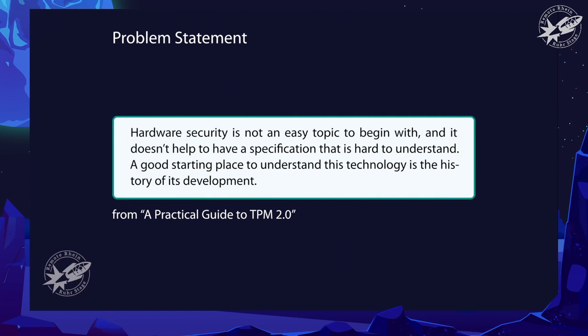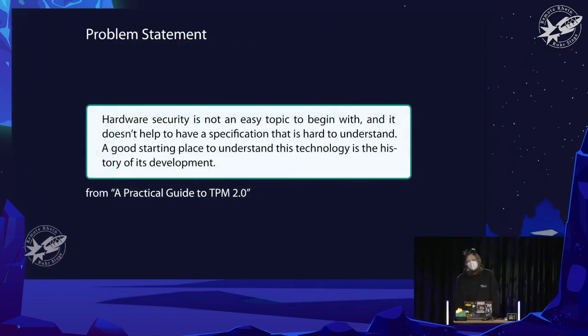I found a book called 'A Practical Guide to TPM 2.0' and it gives us a useful problem statement: hardware security is not an easy topic to begin with, which I frankly agree with. And it doesn't help to have a specification that is hard to understand. A good starting place to understand this technology is the history of its development.